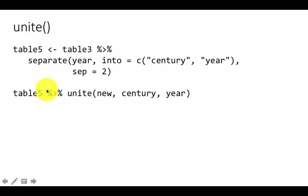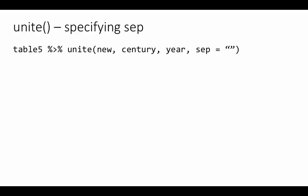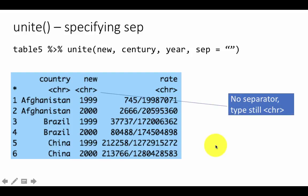Now we are going to unite from table five the two columns century and year into a new column called new. The result then would be like this. We see the new column. The column is still a character column, which is fine. But you also see that there is a separator that's been added. By default, unite adds underscore as a separator. If you don't want that, we can take action by saying separator is the empty string. If you do this, you get the result with no separator.